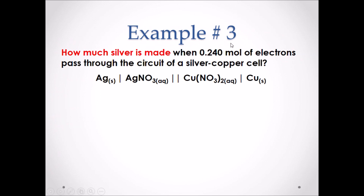Example number three: how much silver is made when 0.240 moles of electrons pass through the circuit of a silver-copper cell? Pause the video and attempt this example.